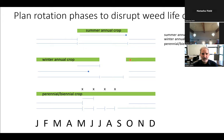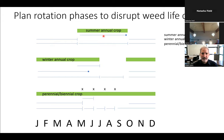What happens if you throw a winter annual crop into the equation? If you're planting in September or October like with winter wheat and harvesting in late June or early July, that disrupts the life cycle of that summer annual. That management decision — just changing the growth period of the main crop — is now acting as another tool in your toolbox.